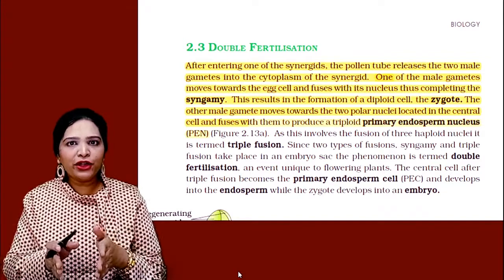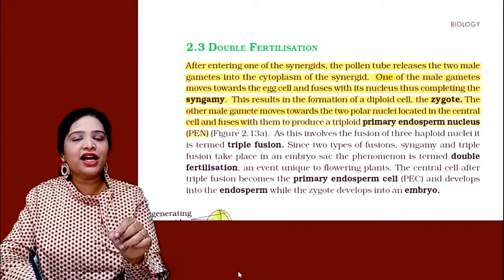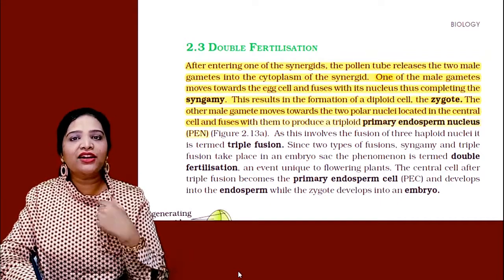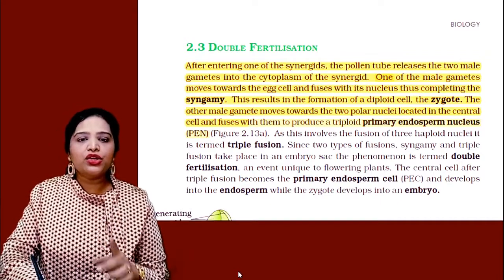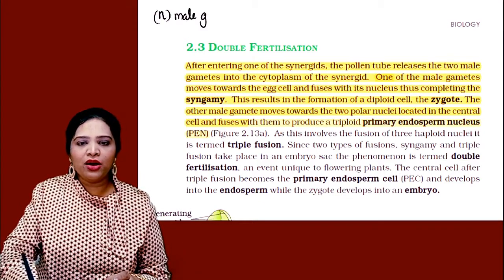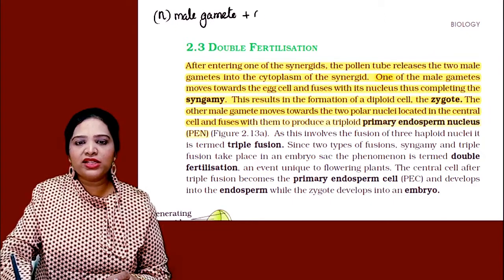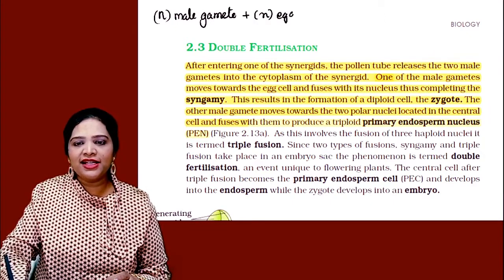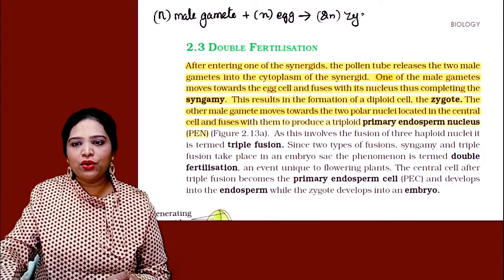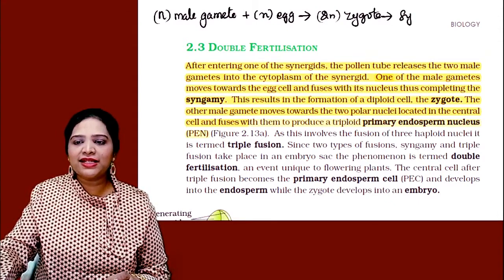The pollen tube brings two male gametes. When they get inside the synergids, the synergids rupture and release the two male gametes. One male gamete, which is haploid, fuses with the egg cell and becomes 2N — that is the zygote. This is what we call syngamy.